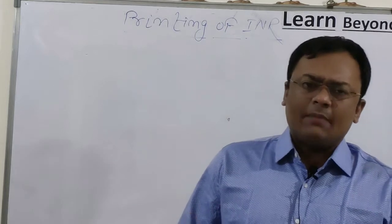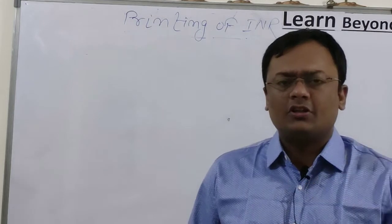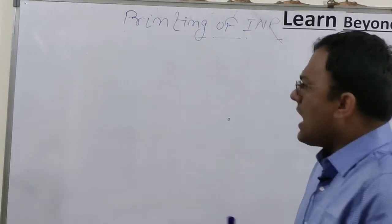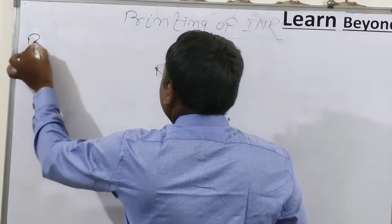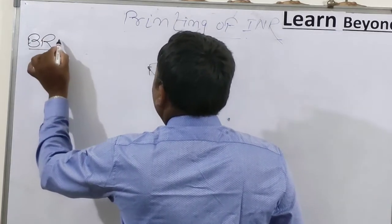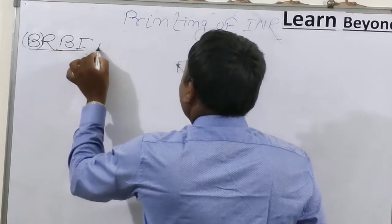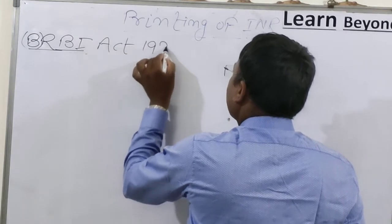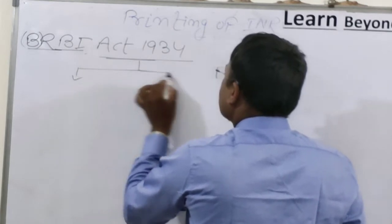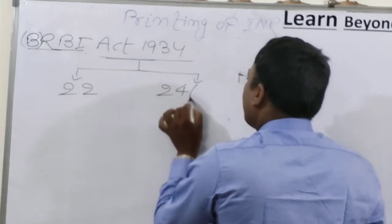Before RBI, Imperial Bank supervised currency printing, but after RBI came into existence, RBI handles the printing. Under the RBI Act 1934, there are two sections you must remember: Section 22 and Section 24 Subsection 1. Both sections are important. When we distinguish RBI Act from Banking Regulation Act, more sections will be covered, but in today's class focus on these two.